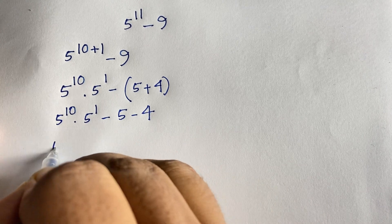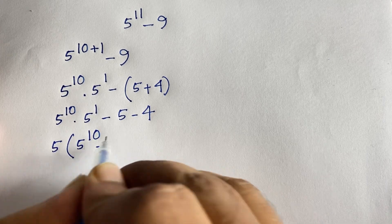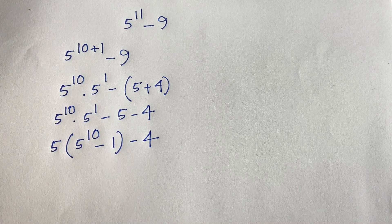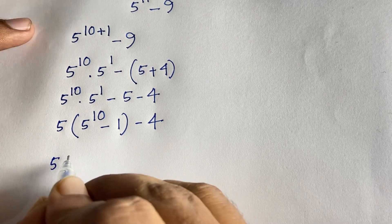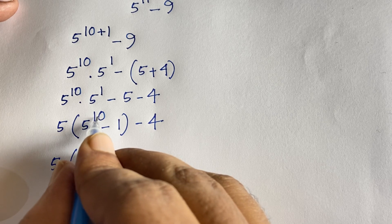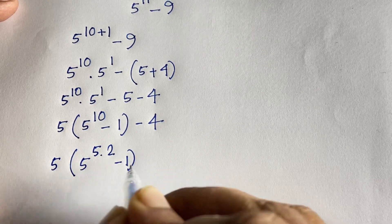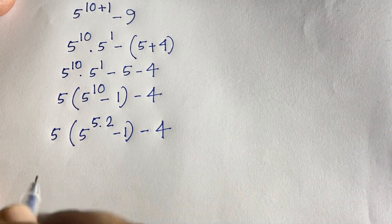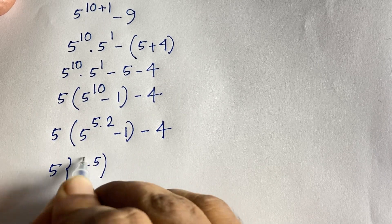Here 5 is common in the first two terms, so factoring out 5 gives: 5 times (5 to the power 10 minus 1), minus 4. Now 5 to the power 10 can be written as 5 times 2 minus 1, which gives us 5 times (5^5) to the bracket power 2, minus 1, minus 4.